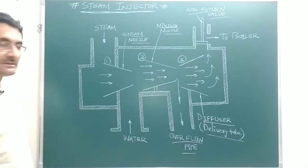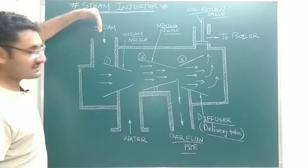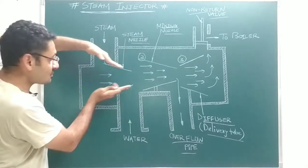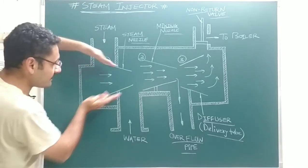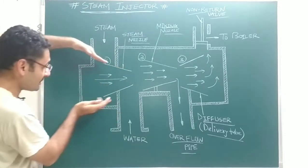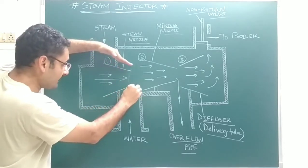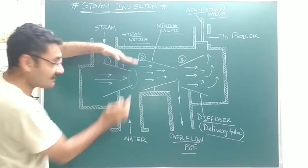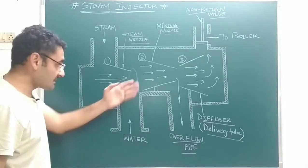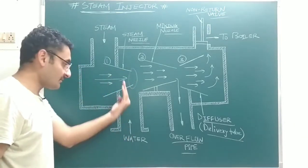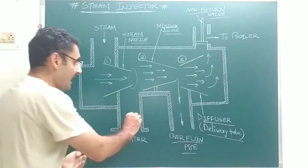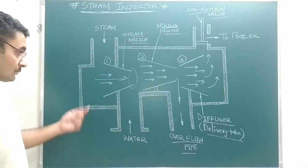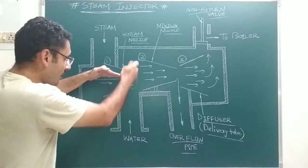In the working principle: steam enters from the first inlet into the steam nozzle. Inside the steam nozzle, the velocity of the steam is increased, and at the outlet of the steam nozzle, pressure drops — pressure is decreased. Due to this, a suction effect is produced, and water is drawn upward to mix with the steam in the mixing nozzle.